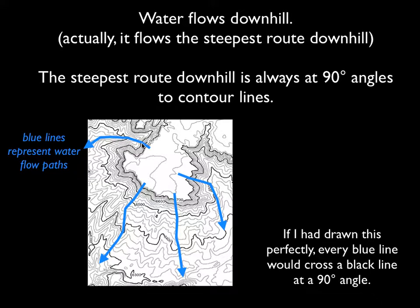The steepest route is always at 90-degree angles to contour lines. You can see this water curving around as it goes perpendicular to all the contour lines. If I had drawn this perfectly, every single blue line would cross a black line at exactly a 90-degree angle.